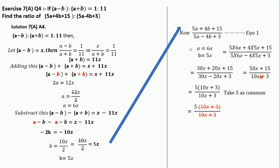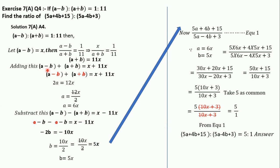Taking a common factor of 5 from both numerator and denominator, the 5 cancels and we get 5 is to 1 as the final answer. So (5a + 4b + 15) : (5a − 4b + 3) = 5 : 1. The key trick is to find values of 'a' and 'b' separately using addition and subtraction of the given equations. Please like, subscribe, and comment if you have any doubts. Thank you!